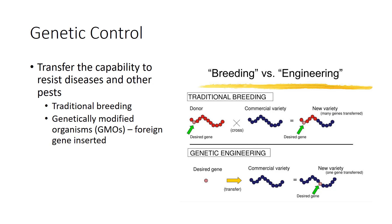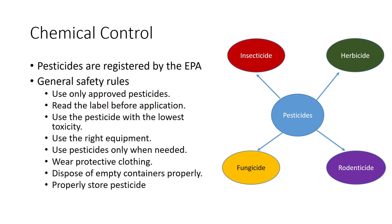Chemical pest control uses a pesticide — a chemical used to control pests. Pesticides used to control insects are called insecticides; to control weeds, herbicides; to control fungi, fungicides; and to control rodents, rodenticides. Pesticides must be registered by the Environmental Protection Agency. All chemicals are hazardous to humans and should be used properly. All individuals working for a commercial enterprise and using pesticides must take a test to obtain a pesticide applicator license. General safety rules include: use only approved pesticides, read the label before application, use the pesticide with the lowest toxicity, use the right equipment, use pesticides only when needed, wear protective clothing, and dispose of empty containers properly and store pesticides properly.